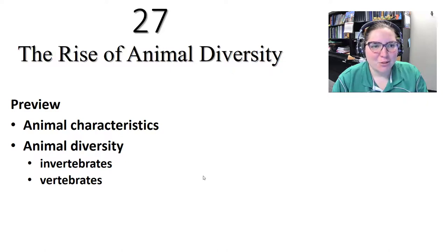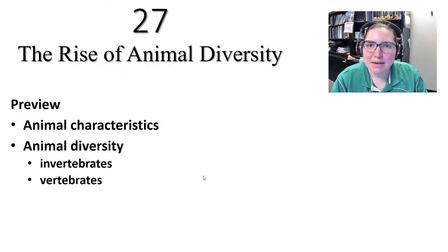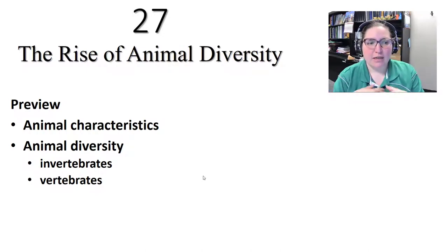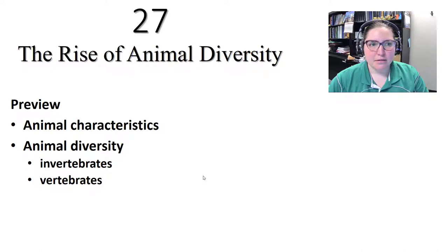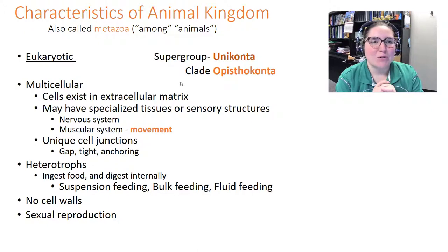We're starting Chapter 27, the animal chapter. We'll cover what makes something an animal and animal diversity, including invertebrates and vertebrates.